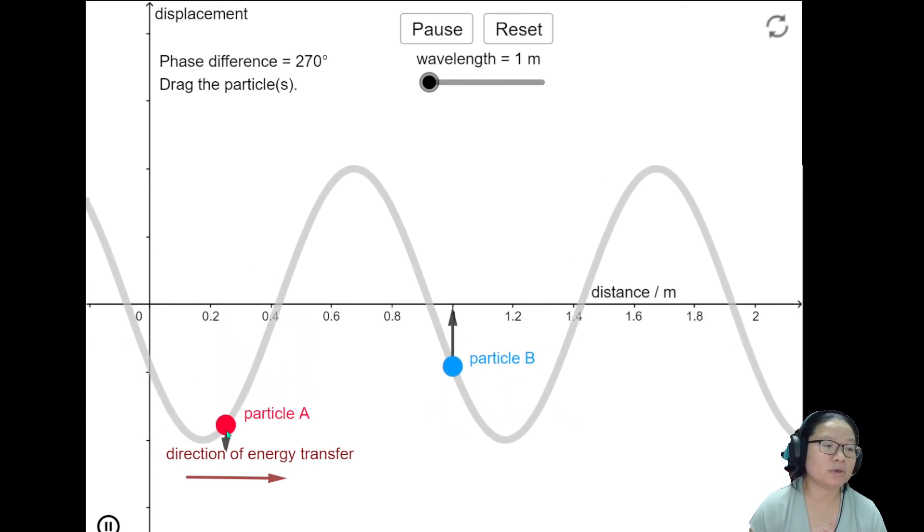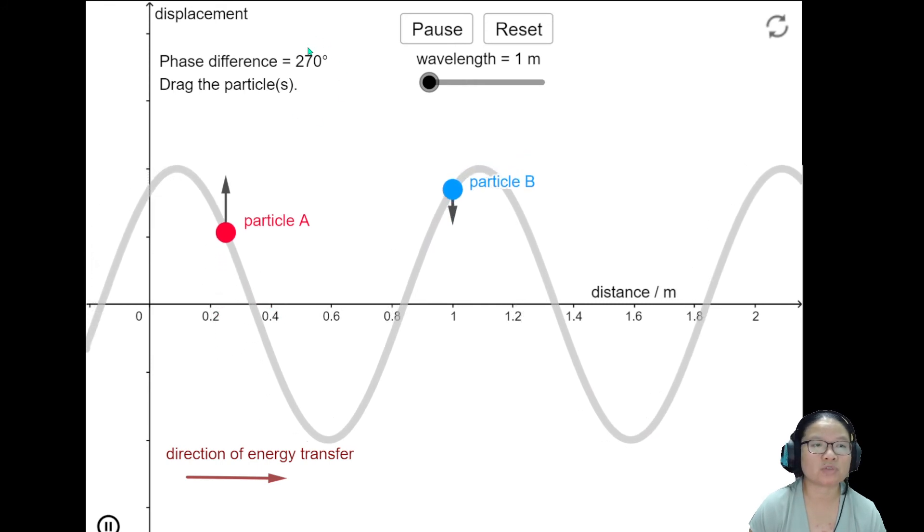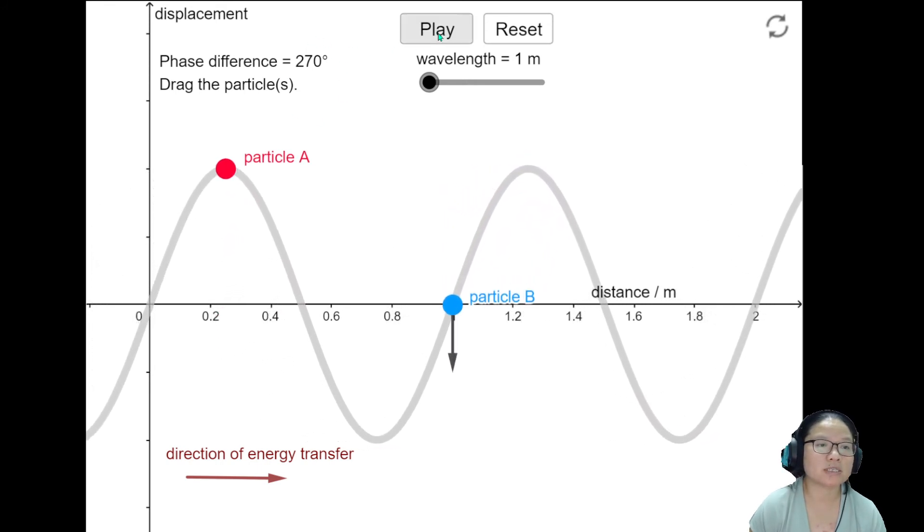So particle A and B will move up and down. And the phase difference between them is fixed at 270 because the distance between them from here to here is 3 quarters of a wavelength.